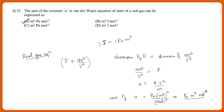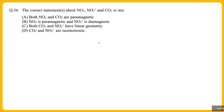Since one pascal·m³ equals one joule, if you replace Pa·m³ with joules in Pa·m⁶/mol², you are left with J·m³/mol² — which corresponds to option D. So option A and option D are both correct units for 'a' in the van der Waals equation.